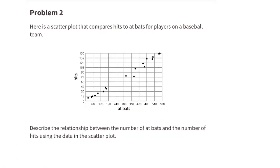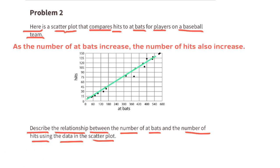Problem number two. Here is a scatter plot that compares hits to at bats for players on a baseball team. Describe the relationship between the number of at bats and the number of hits using the data in the scatter plot. As the number of at bats increase, the number of hits also increase.